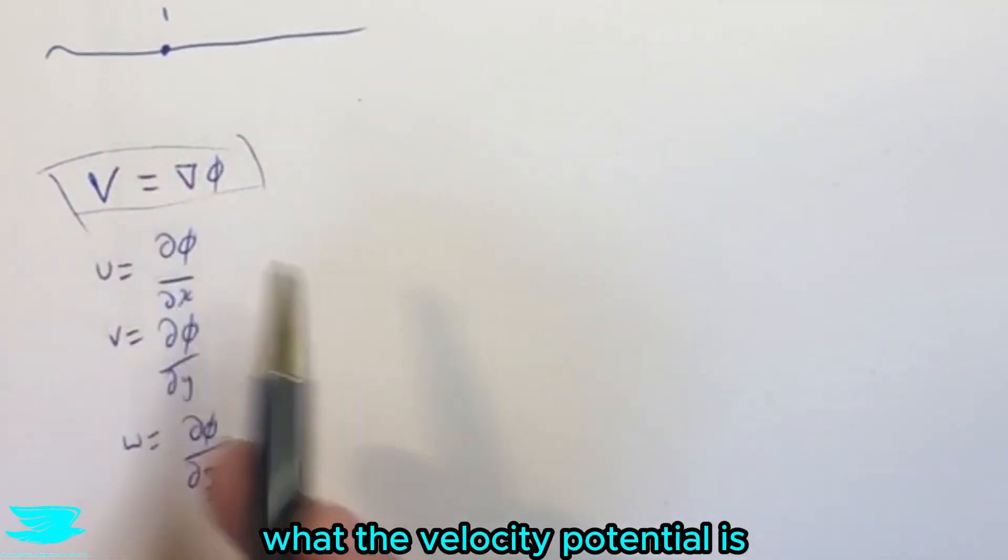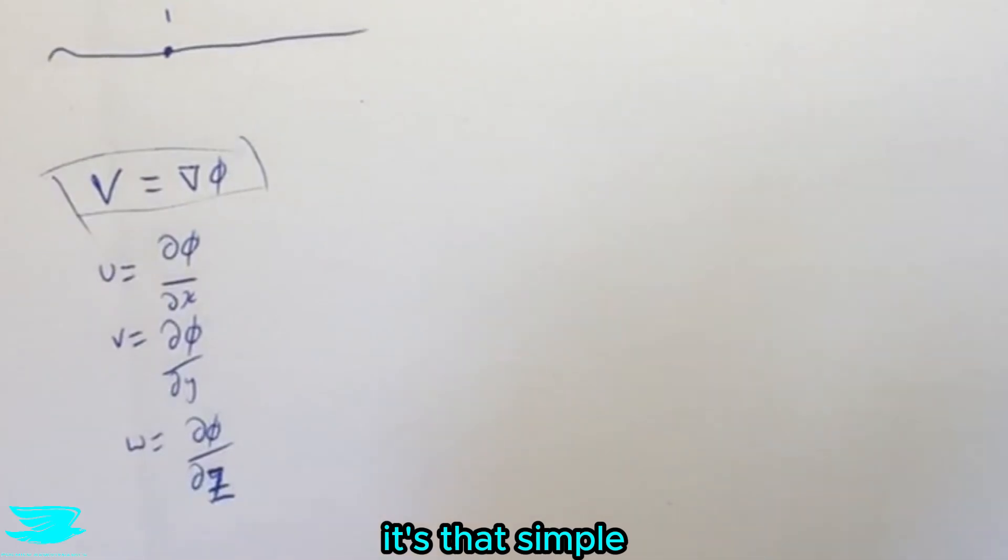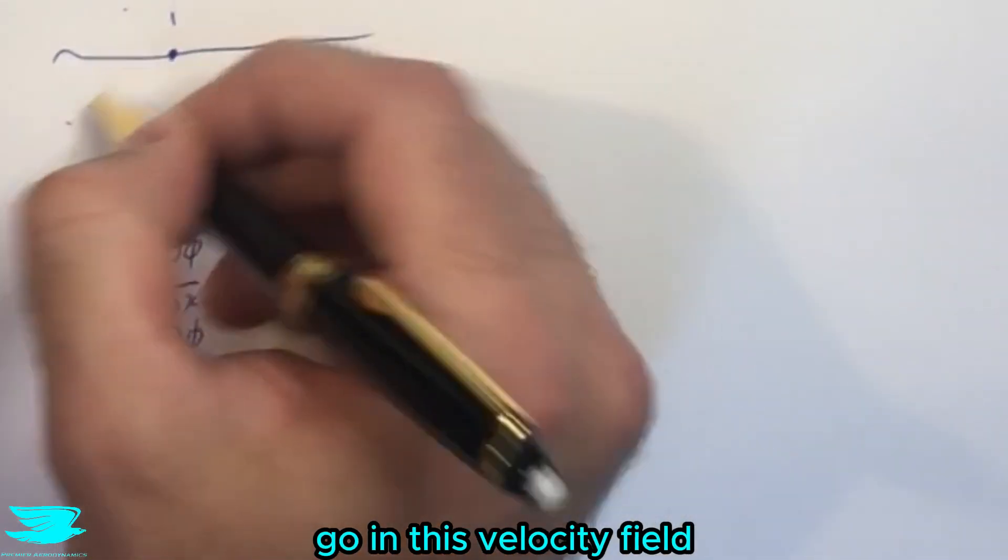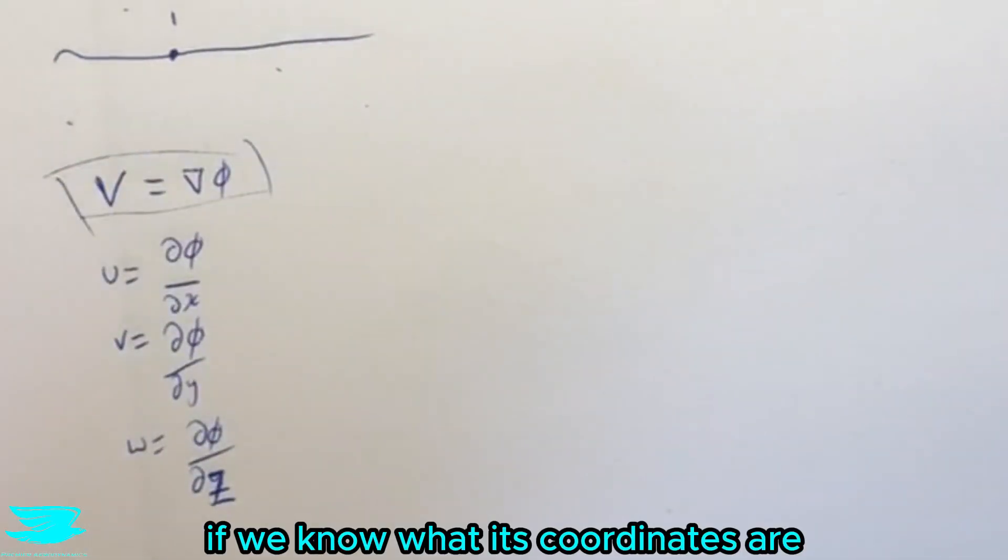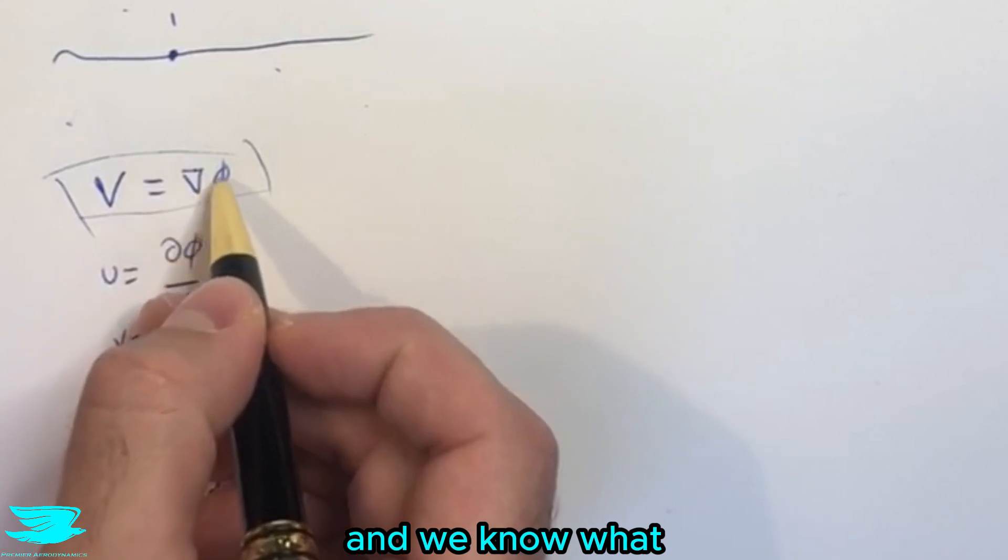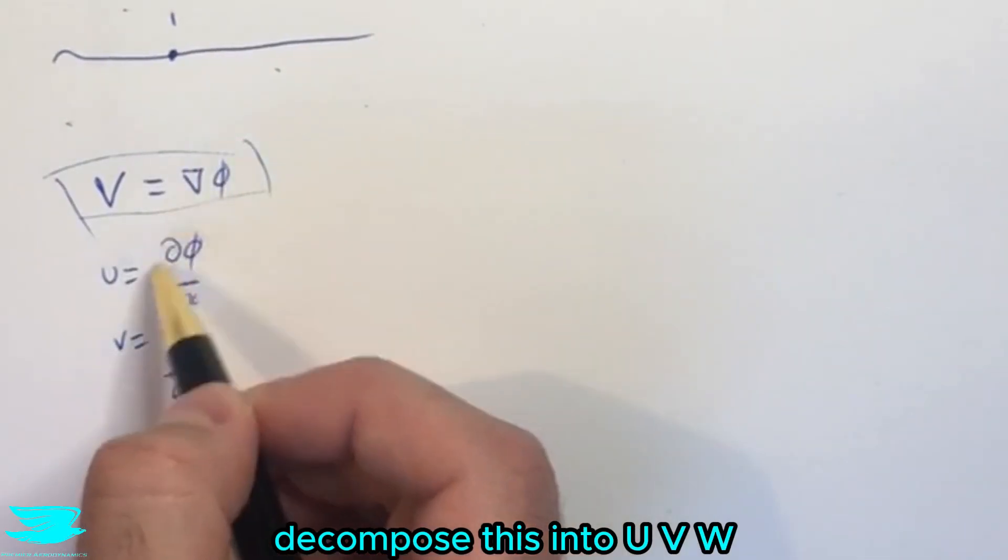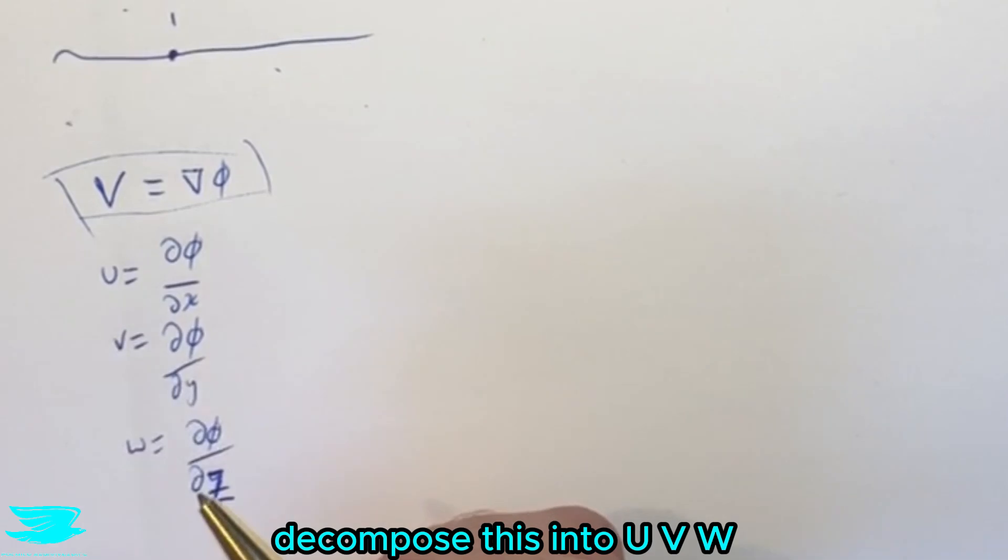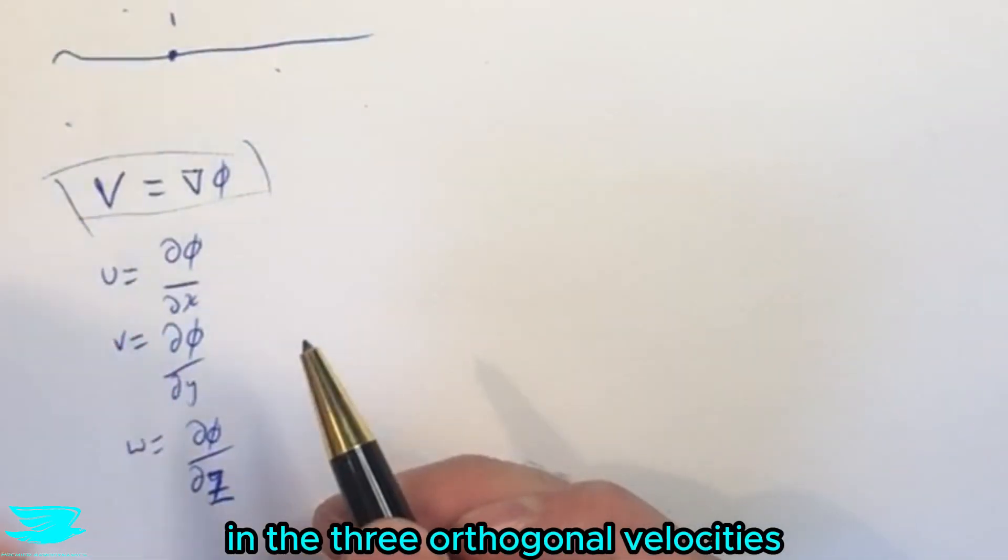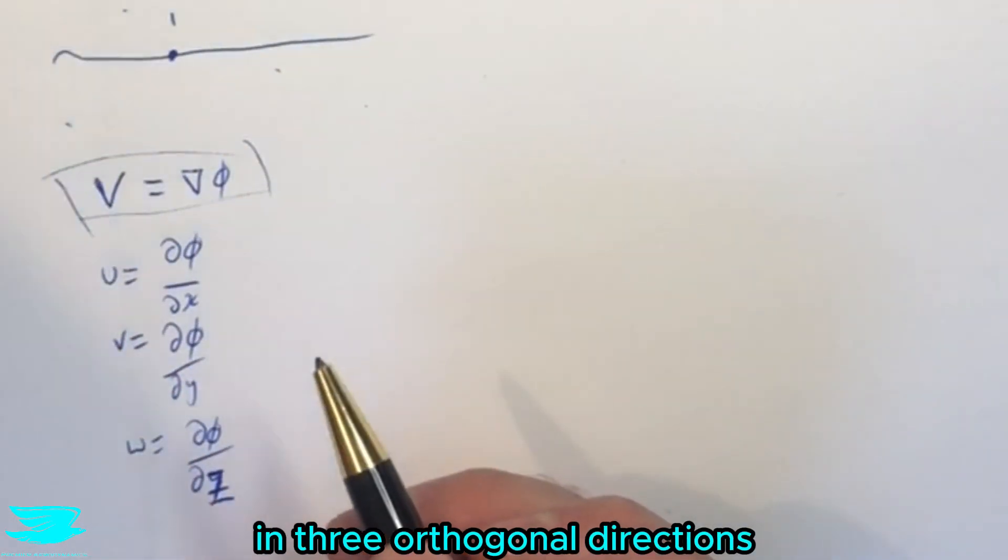So that's really what the velocity potential is. It's that simple. That means anywhere we go in this velocity field, if we know what its coordinates are and we know what the velocity potential field phi is, we can then just decompose this into u, v, w by taking the partial differentials in the three orthogonal directions.